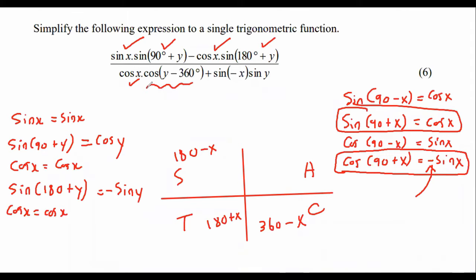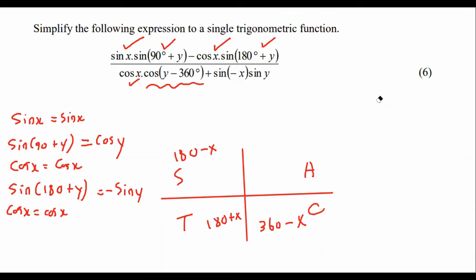Now, cos y minus 360. We need to have a little chat about this one because I know what a lot of you want to do. You think, oh, this is easy. Kevin, I can do this in my sleep. I'll just take out a negative as a common factor. And then it will just look something like this. Guys, you cannot take out a negative or any common factor for sin, cos, and tan.